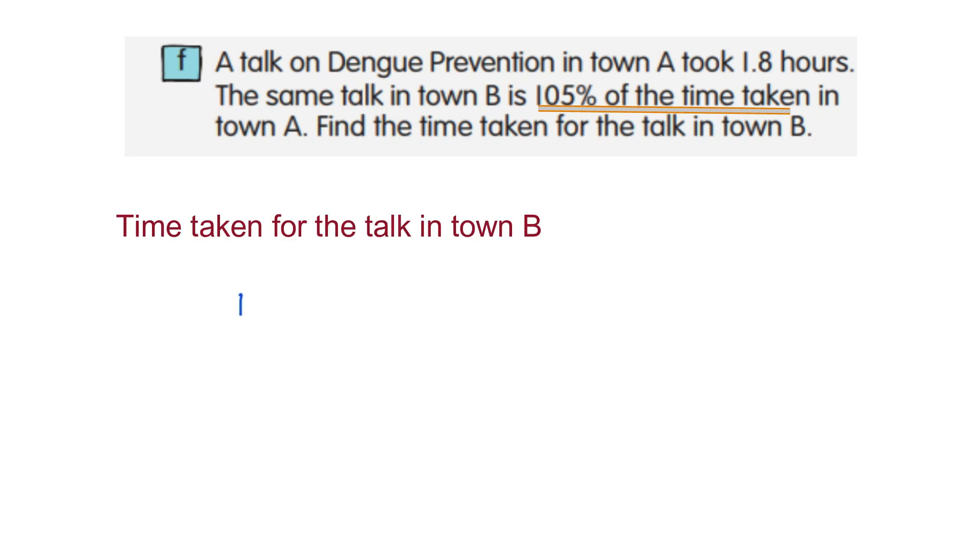So 0.5% of, you need to multiply by 1.8 hours. Convert the percentage to fraction. When you multiply, you'll get 1.89 hours.